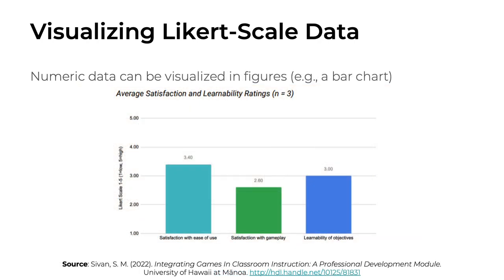Here's another example showing how Likert-scale data can be analyzed and turned into a vertical bar chart. This chart is about average satisfaction and learnability ratings. The y-axis shows the Likert-scale values 1 to 5, where 1 is low and 5 is high. The x-axis has three bars, one for each of Sasha's usability categories. The vertical bar chart makes it very easy to understand and compare across categories. The light blue bar shows the average satisfaction rating for ease of use was 3.4. The green bar shows an average satisfaction rating of 2.6 and an average learnability rating of 3.0. That's a little bit about how to organize, analyze, and visualize Likert-scale data.